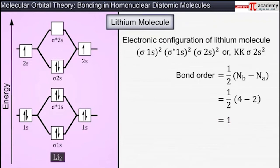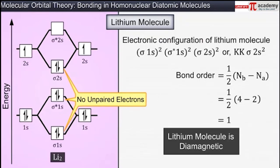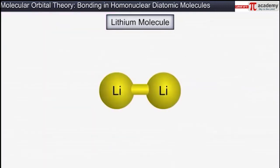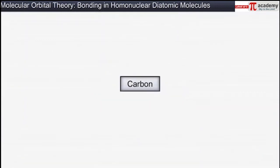From the bond order, it is clear that lithium is a stable molecule, and as no unpaired electron is present in its molecular orbitals, it is diamagnetic in nature. This diamagnetic lithium molecule is found to exist in the vapor state.